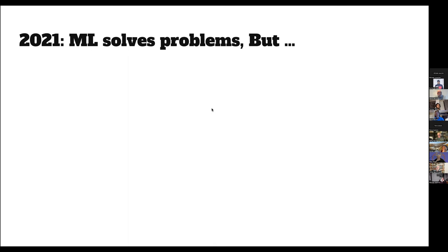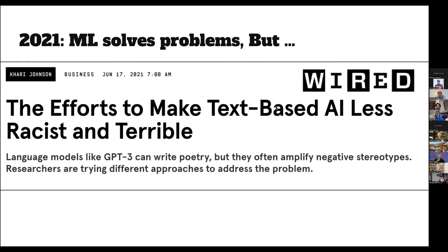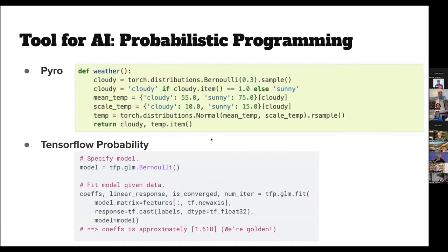Machine learning could help solve problems like that, but you get articles in Wired saying 'the efforts to make text-based AI less racist and terrible.' It's not a good sign when your technology is being described as racist and terrible. There are lots of technologies we can use. You guys are the logic programming community and maybe adjacent to you is the probabilistic programming community — same idea of describing relations rather than step-by-step solutions, but with probability distributions rather than logic. I'd have liked to hear more about the intersection of those two communities.